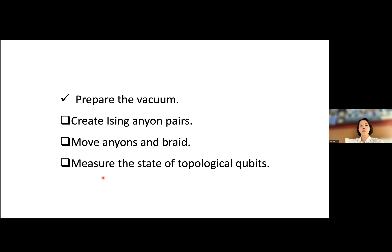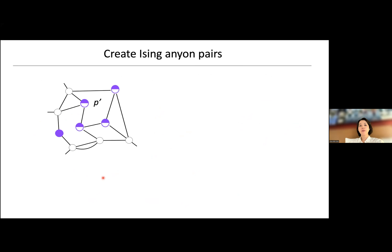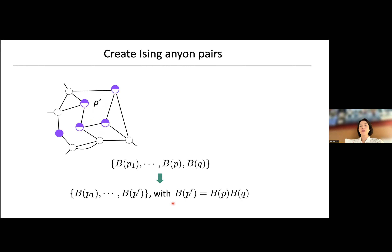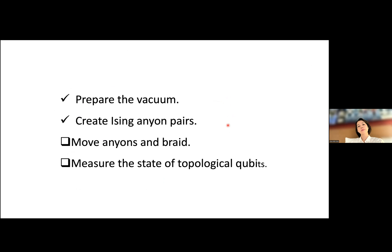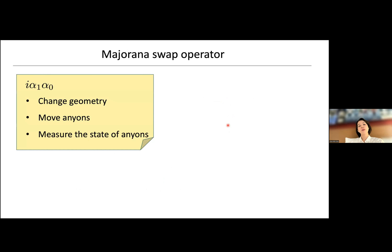Once the stabilizers are in place, to create Ising anyon pairs, all we have to do is forget that a bond existed. This bond is defined by having one stabilizer for one plaquette and another for the adjacent plaquette. If we take the product of those two stabilizers and define a new stabilizer for the enlarged plaquette, that removes the bond. In a familiar square lattice example, removing this bond creates a pair of Ising anyons.